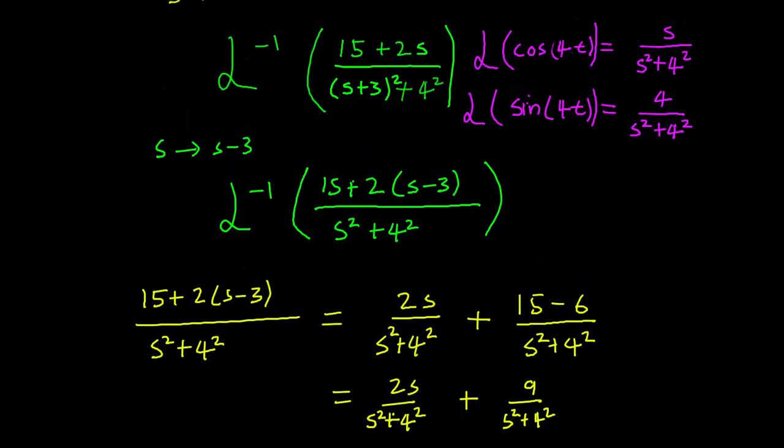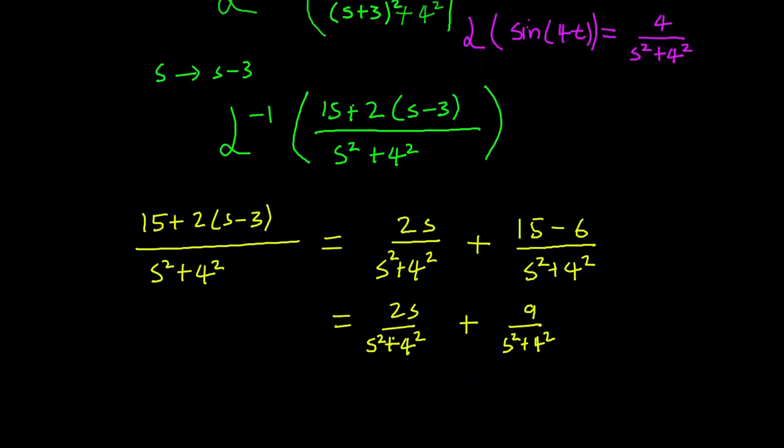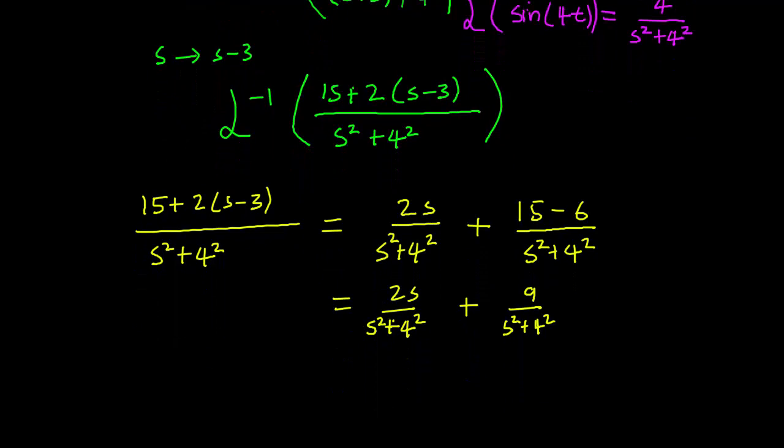And using the techniques, we know that the Laplace transform of cosine and sine. So we can write this down instead as, this is equal to 2s over s squared plus 4 squared plus 9 over 4 times 4 over s squared plus 4 squared.